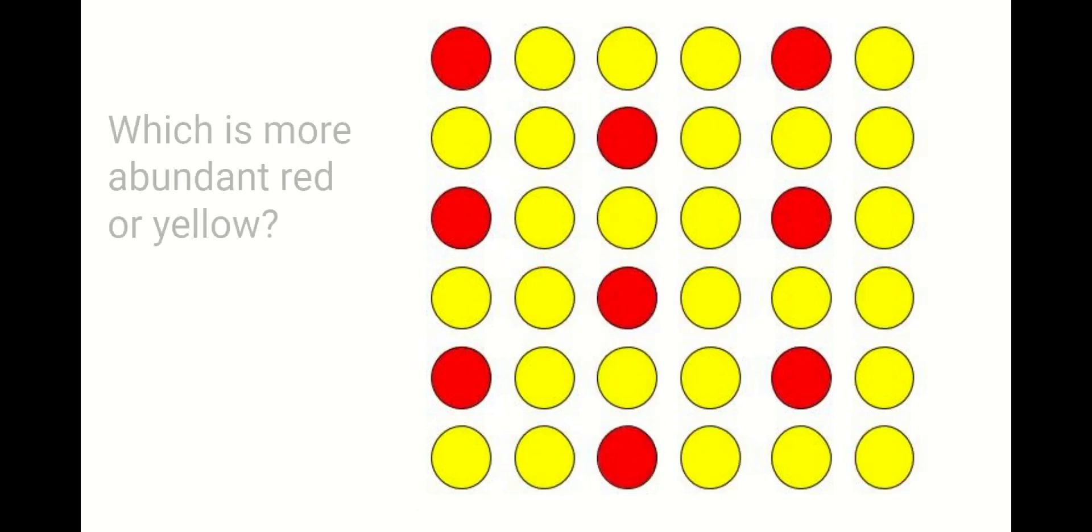How about this one? Which is more abundant, red or yellow? You can see that there's more yellow dots than there are red dots. By how much? Well for every four dots one of them is red and three are yellow. So 25% or one quarter of the dots are red.